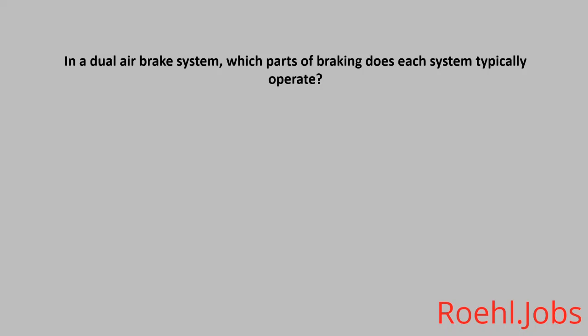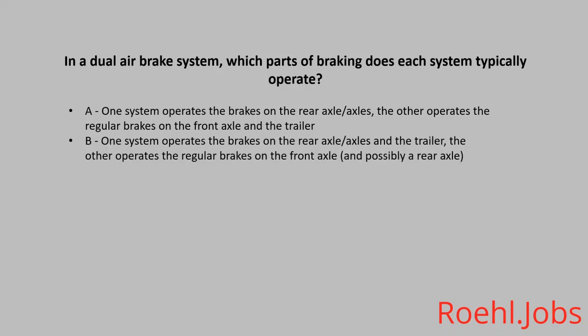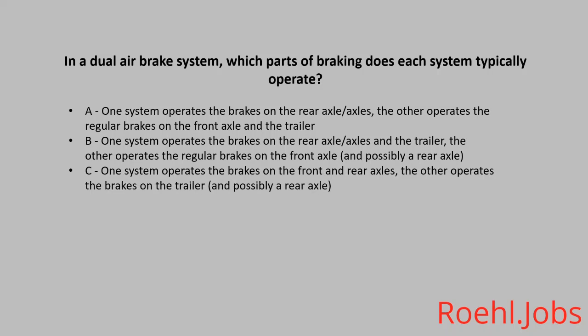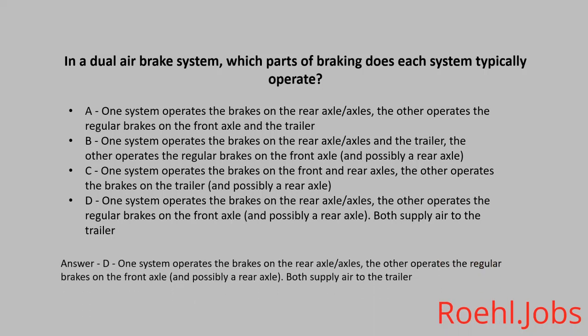In a dual air brake system, which parts of the braking does each system typically operate? A. One system operates the brakes on the rear axle; the other operates the regular brakes on the front axle and trailer. B. One system operates the brakes on the rear axle; one system operates the brakes on the front axle. C. One system operates the brakes on the front and rear axles; the other operates the brakes on the trailer. D. One system operates the brakes on the rear axle; the other operates the regular brakes on the front axle; both supply air to the trailer. The answer: D. One system operates the brakes on the rear axle; the other operates the regular brakes on the front axle; both supply air to the trailer.